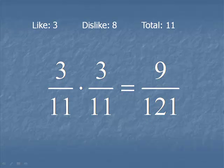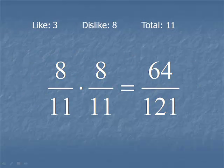Let's try the probability that you dislike both. Instead of 3 out of 11, this fraction we'll work with is 8 out of 11. Multiply straight across to get 64 out of 121.